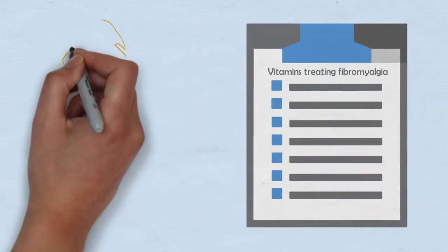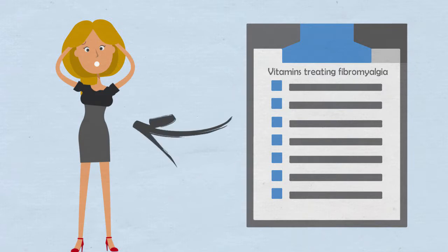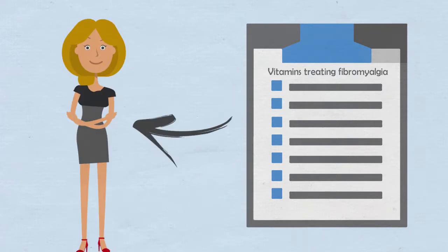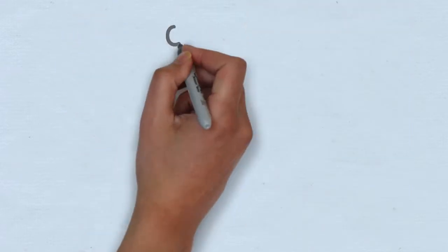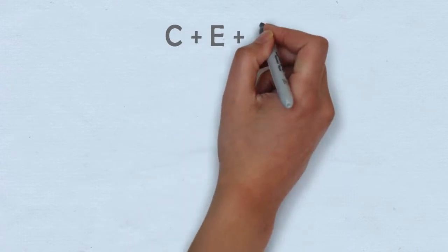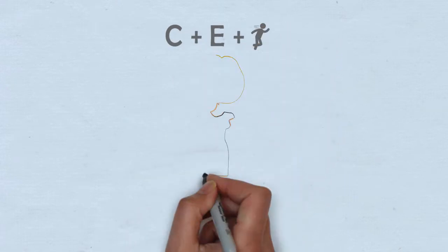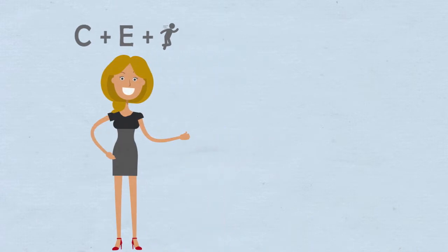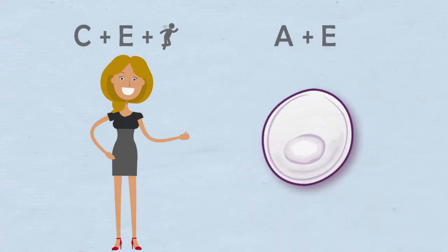At the very least, these vitamins and minerals have clinical support to help naturally reduce fibromyalgia symptoms. Studies suggest that vitamins C and E, coupled with exercise, reduced stress in fibromyalgia patients, and vitamins A and E can reduce cell loss and damage.